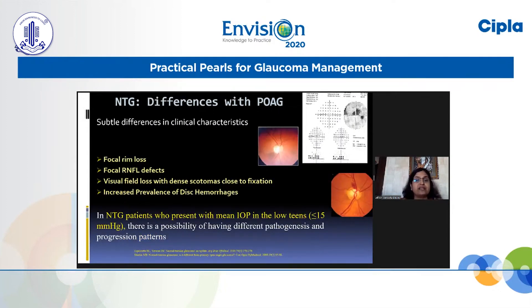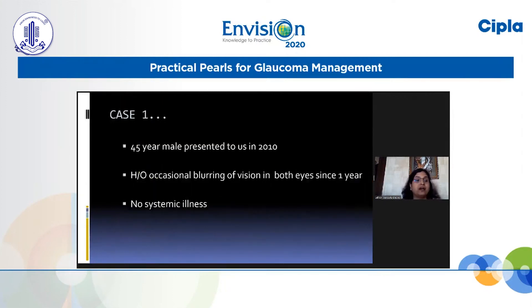Are there any clinical differences in presentation of NTG patients compared to POAG? Yes, there are. These patients present with focal rim loss, focal RNFL defects, and visual fields closer to fixation. Most importantly, there is increased prevalence of disc hemorrhages. NTG patients presenting with mean IOP in the low teens — less than 15 — may have different pathogenesis and progression patterns.